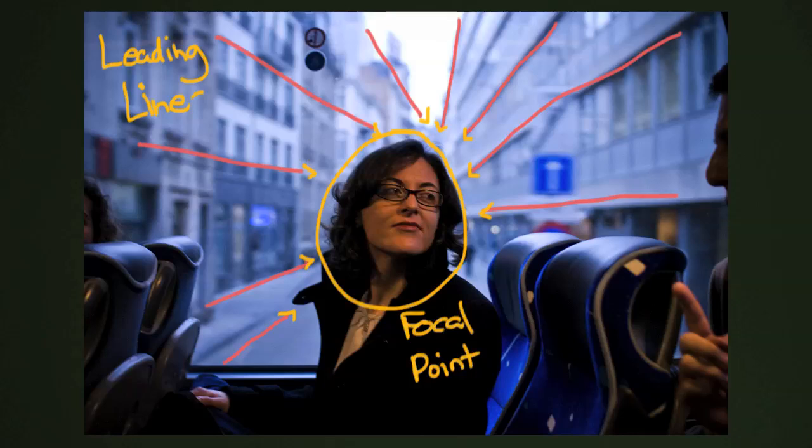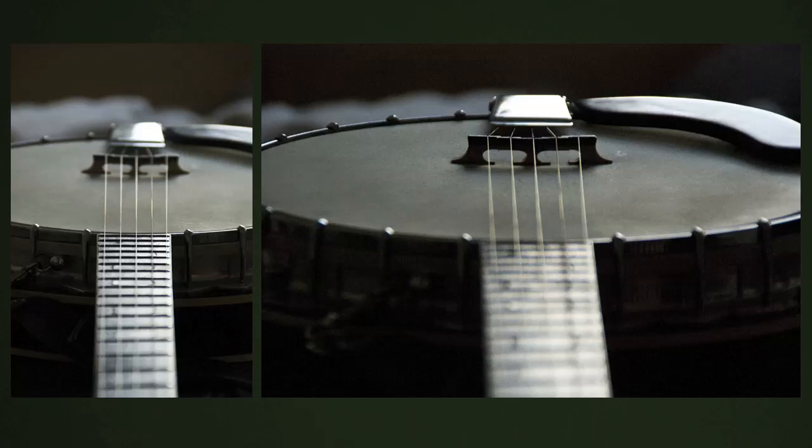Here is an example of basically the same photograph taken two times with two different sets of leading lines as sort of the compositional backbone of the image. These are not really groundbreaking images, but they're just photos of my friend Jay's banjo here. And the banjo was just sitting on my bed.